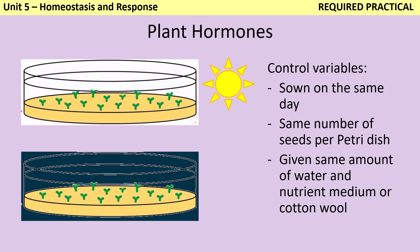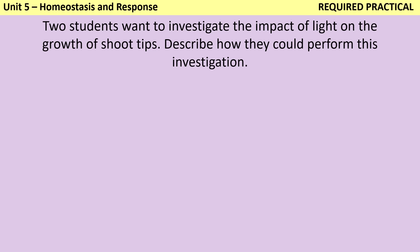The second required practical in the homeostasis topic is just for the triple scientists. You should have investigated the impact of either light or gravity on some newly germinated seedlings. To do this, you would probably have grown seedlings in two identical Petri dishes or little pots of compost, and placed one on a brightly lit windowsill or by a lamp and the other one in a dark cupboard. Alternatively, you might have positioned them at different angles to investigate geotropism. The independent variable would be whatever you're changing — probably light intensity as it's easier to investigate in school. The dependent variable would be how tall the seedlings grow or whether they grew towards one side or the other.